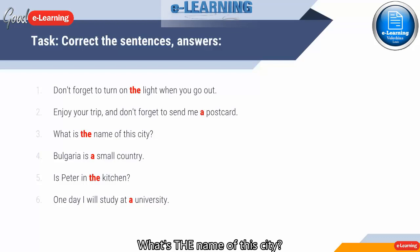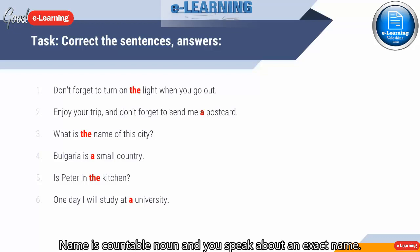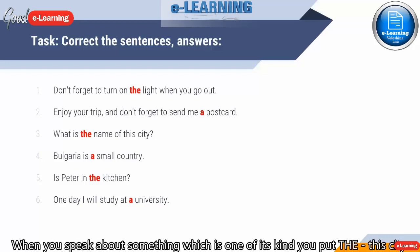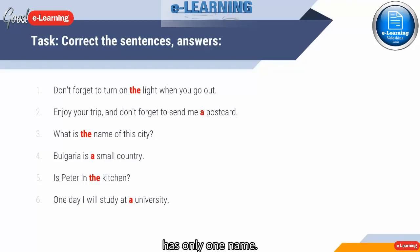The name is countable now and you speak about one exact name. You need the name of this city. When you speak about something which is one of its kind, you put 'the'. This city has only one name. You need to know the name of the city, Bulgaria.